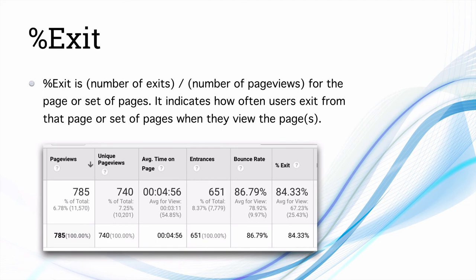Percentage exit is the number of exits divided by the number of page views for a particular page. It indicates how often users exit from that page after viewing it. For this same URL, the percentage exit is 84.33%. This helps you understand whether visitors are only interested in the content on that page or whether they continue to other pages and consume more content.